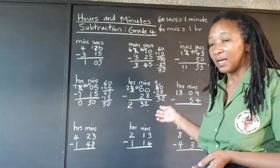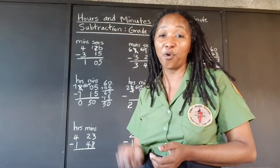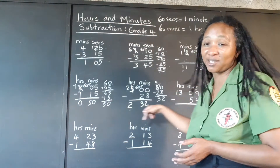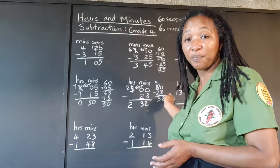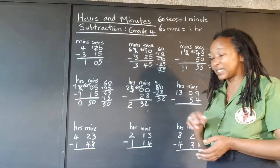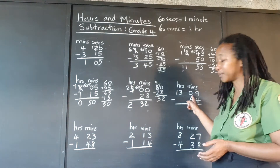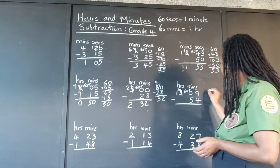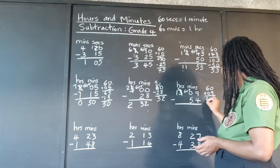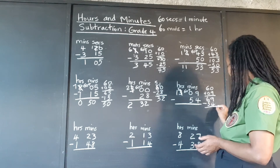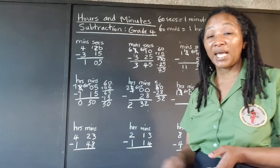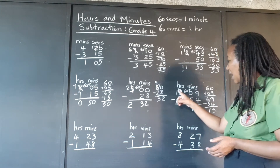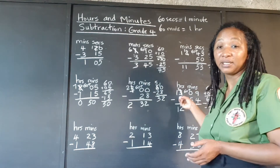Here again, we just have 9 minutes at the top and they're asking us to take 54. We know we can't take 54 from 9, so we go over and take 1 hour out of the 3, leaving 2. We bring it as 60. That's 60 plus 9 equals 69. Now we can take away the 54. It's good to know tricks! So we have 15 minutes left.